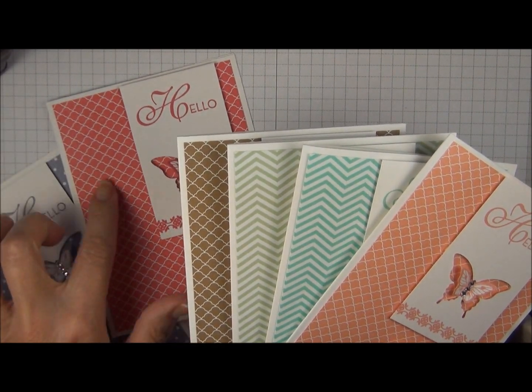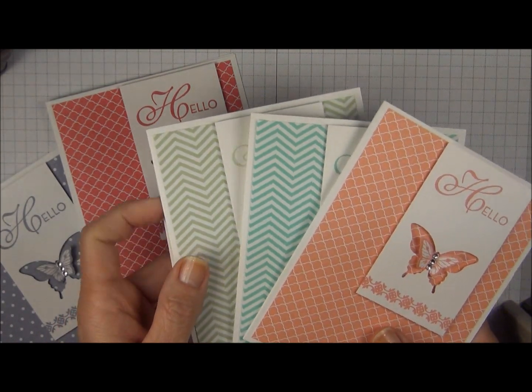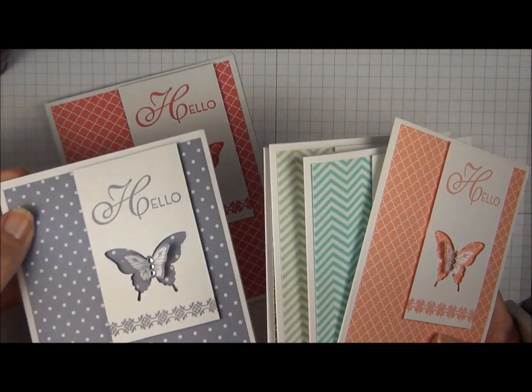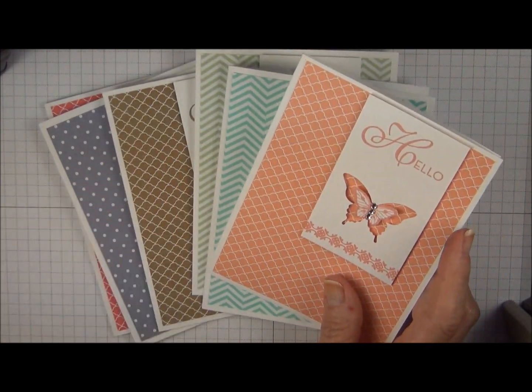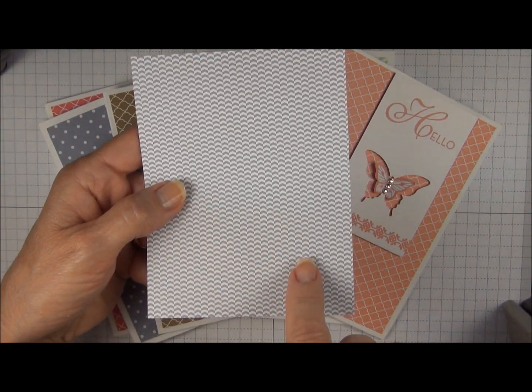And when you get the paper stacks you actually get four different designs. So you have this kind of fancy fan design. You also have a chevron. And you saw the polka dots here. And on the reverse side of the polka dots is another little zig-zaggy kind of design.